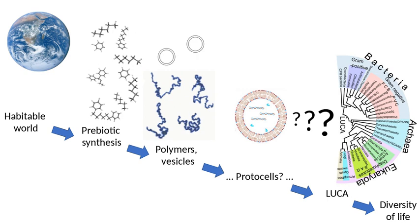Evidence of the early appearance of life comes from the Isua supercrustal belts in western Greenland, and from similar formations in the nearby Achillia islands. Carbon entering into rock formations leaves isotopic fingerprints that are preserved in the sediments, and suggest that life existed on the planet already by 3.85 billion years ago.